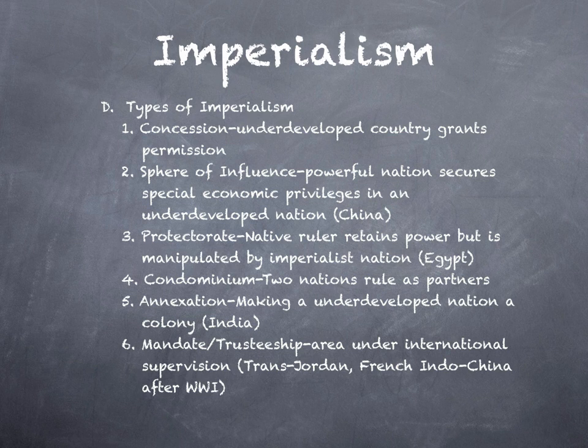The last form of imperialism was a mandate or trusteeship — an area monitored by international forces or organizations. A great example is Transjordan, which today is Israel and Jordan, and French Indochina, today Vietnam, Cambodia, and Laos. After World War I, many European countries received mandates. The idea was they were supposed to take care of these areas, prepare them for independence, and eventually grant them independence.